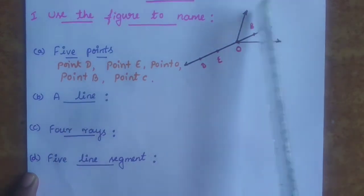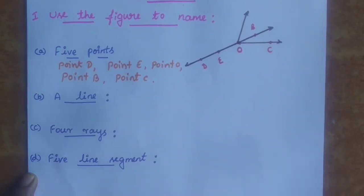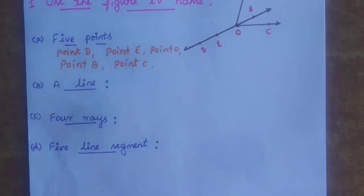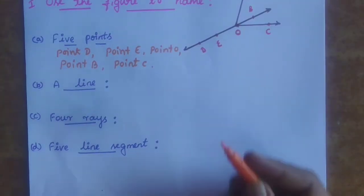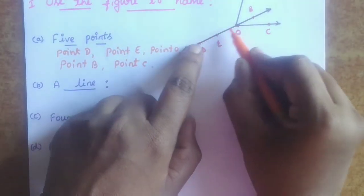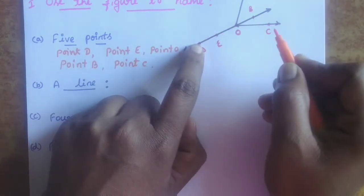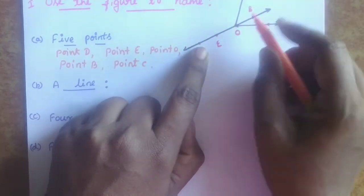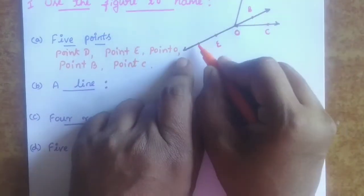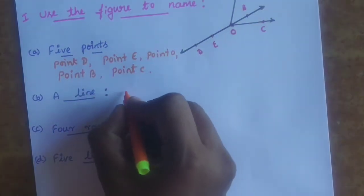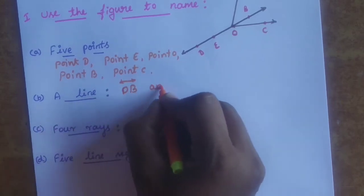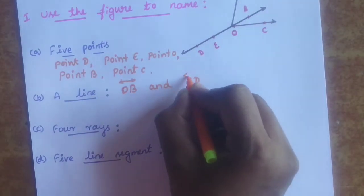The next is: name a line. In this figure we have to find the line. You already know what is a line and line segment. A line extends through two points. That is, DB is one line we can consider. So DB is one line, and BD is another line, as there are two arrow marks — point B extends and point D also extends.